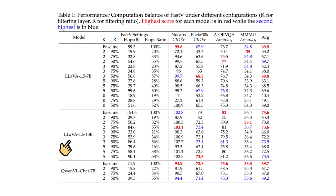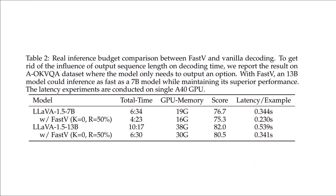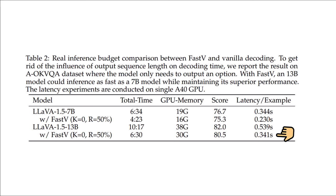For LLaVA v1.5 13B, selecting layer 2 and reducing FLOPs by 50% gives the same average score of 73.6. The table also shows latency per example and GPU memory requirements. By randomly dropping 50% from the first layer, LLaVA 13B achieves latency almost equal to — and slightly faster than — the 7B model, while still achieving a better score.